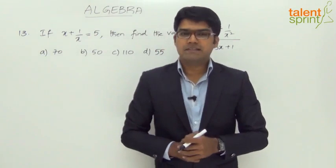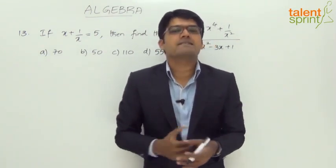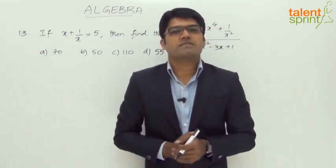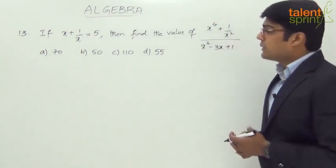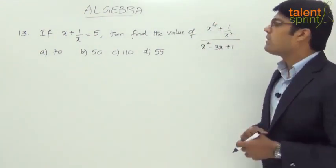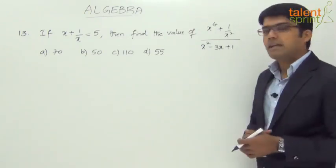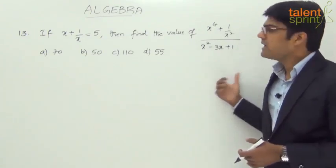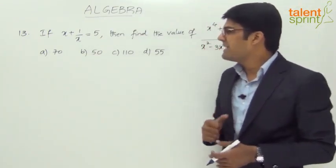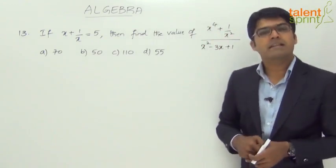Let us now take question number 13, which is also a previous SSE CIGIL exam question. It says, if x plus 1 by x is equal to 5, then find the value of x power 4 plus 1 by x square whole divided by x squared minus 3x plus 1. And the given answer options are 70, 50, 110 and 55.